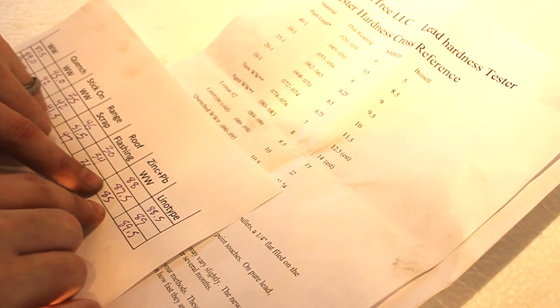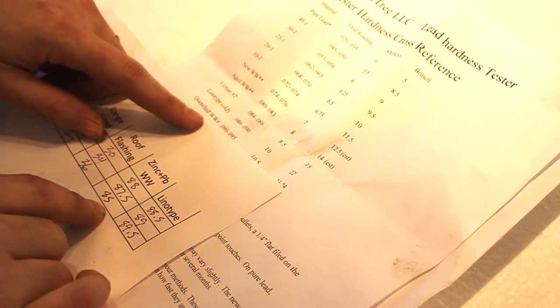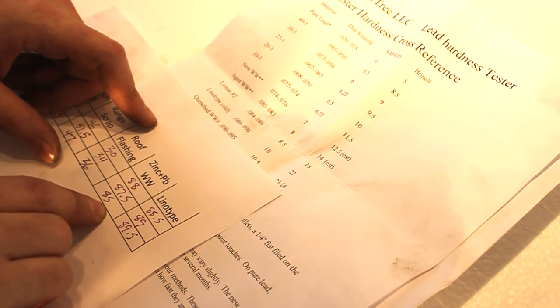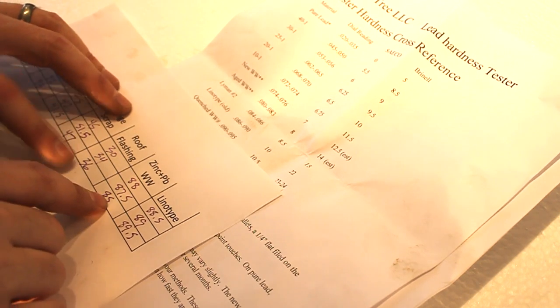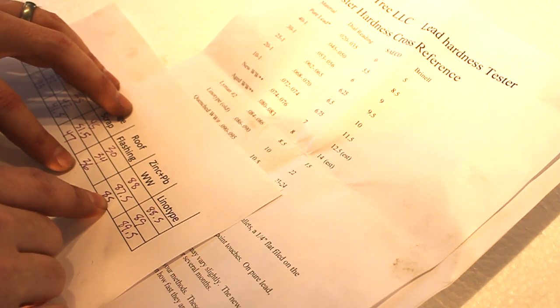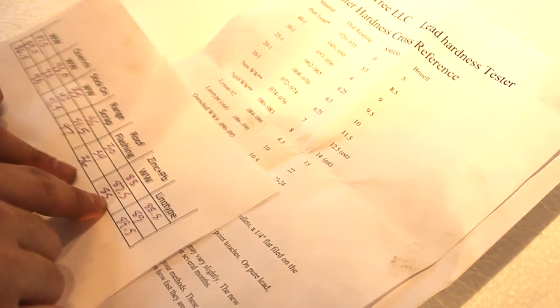The zinc contaminated wheel weight seems to be reading in the high 80s, which I don't know what it should read. I suppose that's probably accurate. I would think that zinc added to lead would probably make it harder, so it seems okay to me.